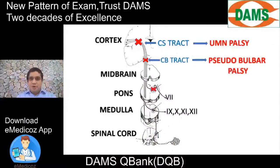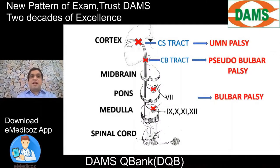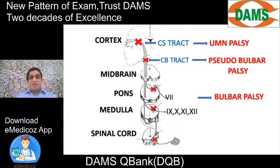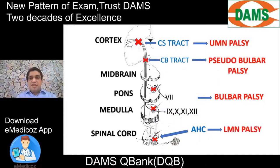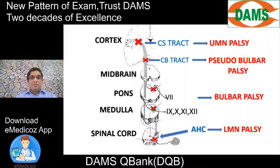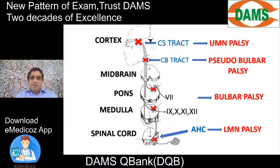The lesion can be in the pons or medulla involving the cranial nuclei, known as bulbar palsy. In patients of ALS, the lesion can also be in the anterior horn cell of the spinal cord, resulting in LMN palsy. A patient with UMN palsy in one segment and LMN palsy in another, or with bulbar or pseudobulbar palsy, all combined, is amyotrophic lateral sclerosis.